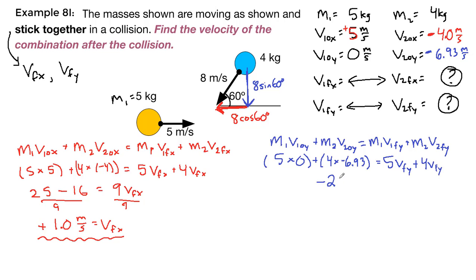On the left, we have negative 27.7 equals 9 v final y on the right. We divide both sides by 9. We're going to get negative 3.1 meters per second is equal to v final y.